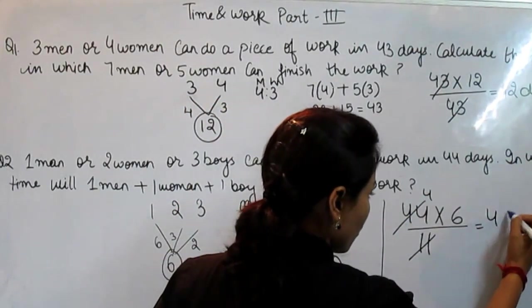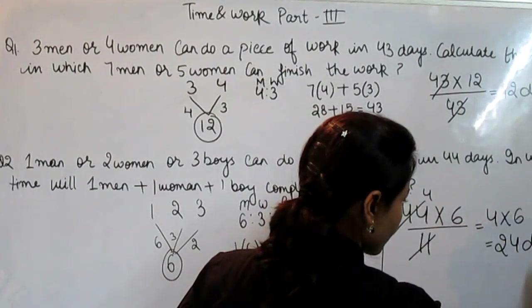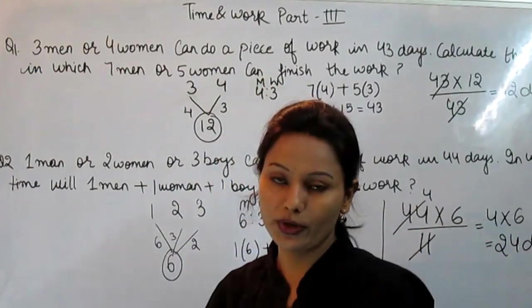what we get: 4 into 6, that is 24. It means they all will finish this work in 24 days.